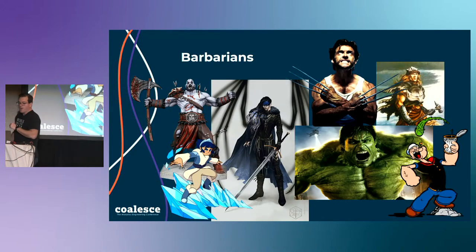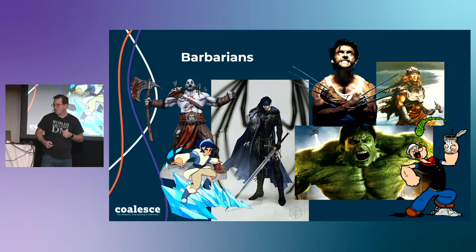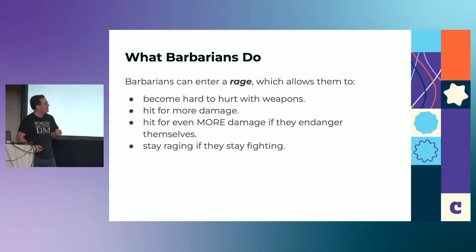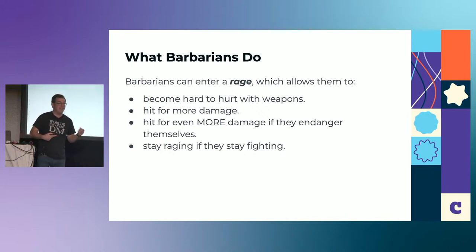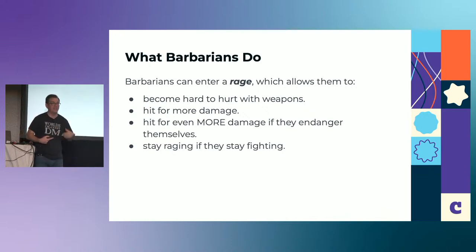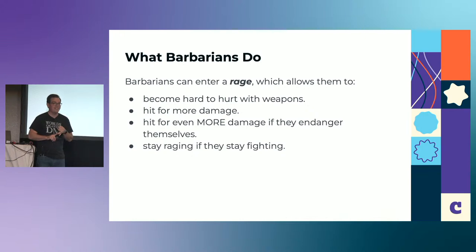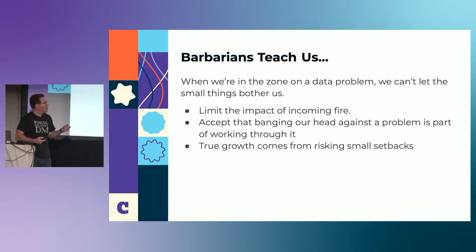Let's start with barbarians. Barbarians are the meat shields of the adventuring party — primal warriors who come alive in the chaos of combat. Their particular mechanic is they enter something called a rage, which allows them to fight relentlessly and become resistant to different types of damage: slashing, bludgeoning, piercing. They do a bit more damage themselves while raging and can do even more with a reckless attack — making themselves easier to hit so they can hit more easily. They stay raging as long as they attack someone or take damage themselves, so no matter what, they stay in the zone.